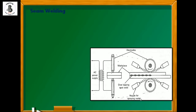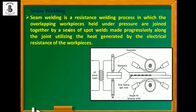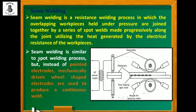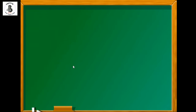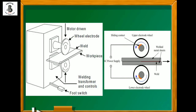Seam welding is a category of resistance welding in which the overlapping workpieces are held under pressure. Both plates are placed in an overlapping condition, so seam welding is only performed for lap joints. It produces a series of spot welds forming a continuous joint on sheet metals. Seam welding is similar to spot welding, but instead of pointed electrodes, mechanically driven wheel-shaped electrodes are used to produce a continuous weld — point electrodes are replaced by roller electrodes.